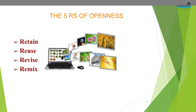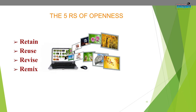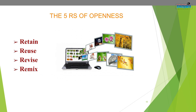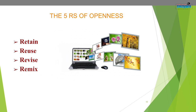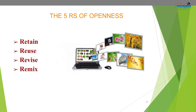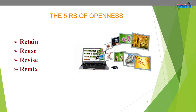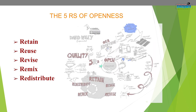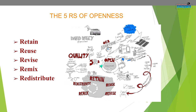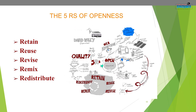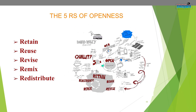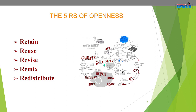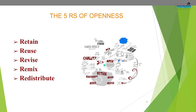The fourth R is remix: the right to combine the original or revised content with other material to create something new — for example, incorporating the content into a mashup. The fifth R is redistribute: you have the right to share copies of the original content, your revisions or your remixes with others — for example, giving a copy of the content to a friend.